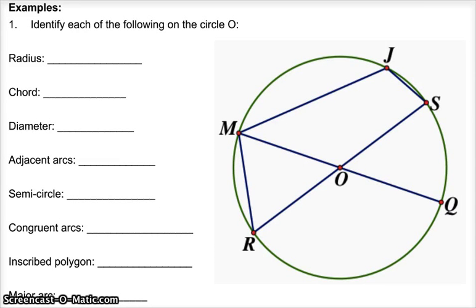All right, next we have this. Just identify some terms. So radius of the circle - there's a lot of different answers you could have for this. They should be a segment that starts with O or has O at one end and has one of these other points at the other end.